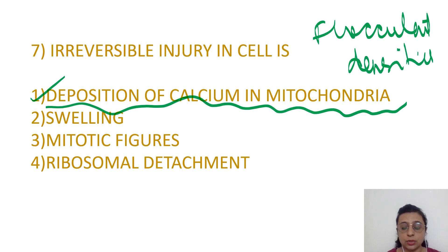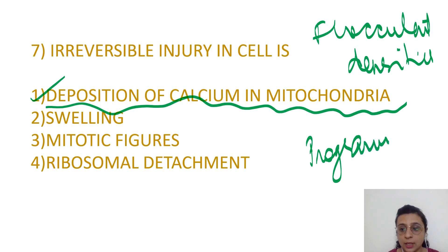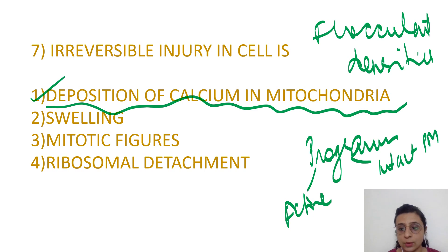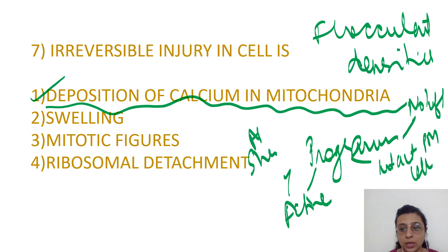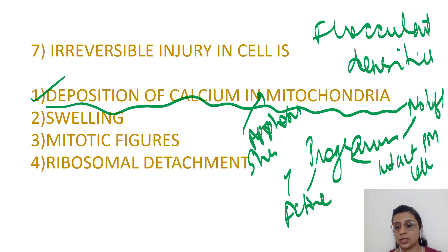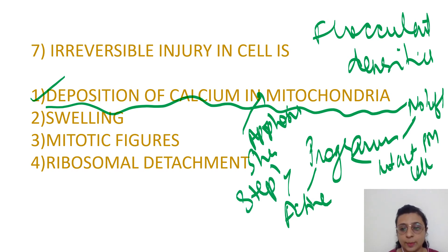To summarize: apoptosis is programmed, active, with less destruction — thus intact plasma membrane and cellular contents, no inflammation. Cells shrink into apoptotic bodies which are well-planned and phagocytosed before any inflammatory reaction is incited, and there is a characteristic step ladder pattern on electrophoresis.